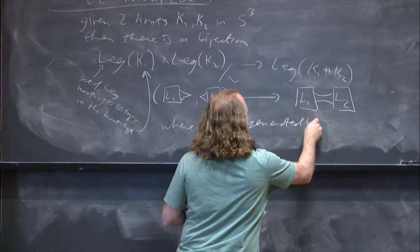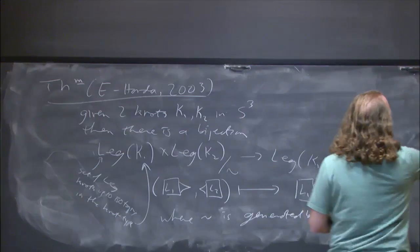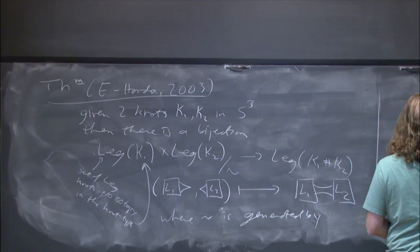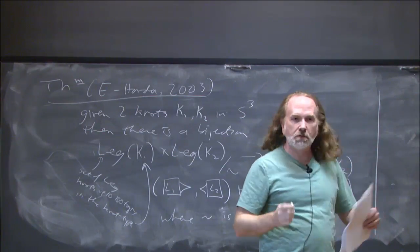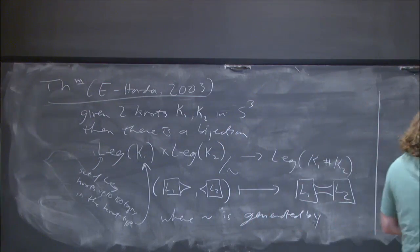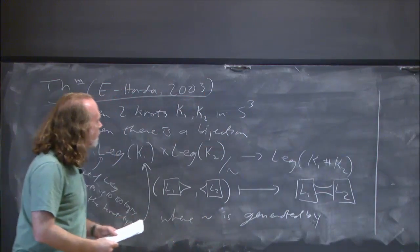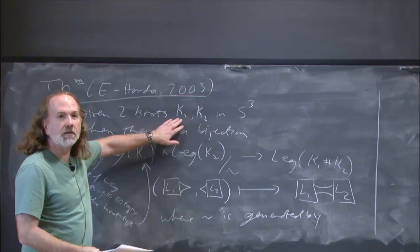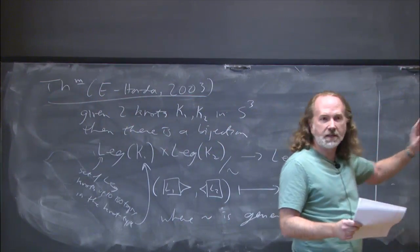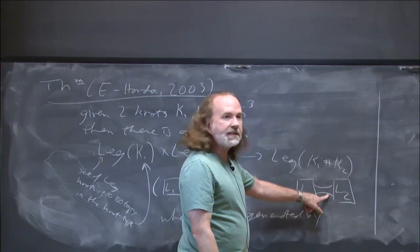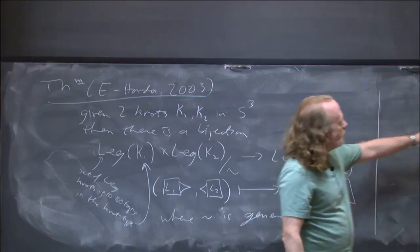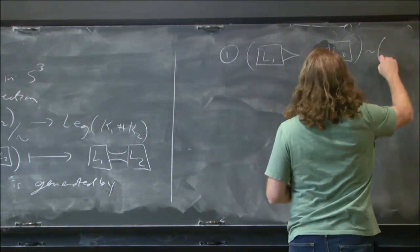The equivalence is generated first by stabilization. If you put a little zigzag into one of the knots, that reduces the Thurston-Bennequin number and either increases or decreases the rotation number depending on orientations. Everything is oriented, though I won't always draw that. If you form the connected sum and there's a zigzag on one side, you could move the zigzag to the other side and get the same thing — so that has to be part of your equivalence.